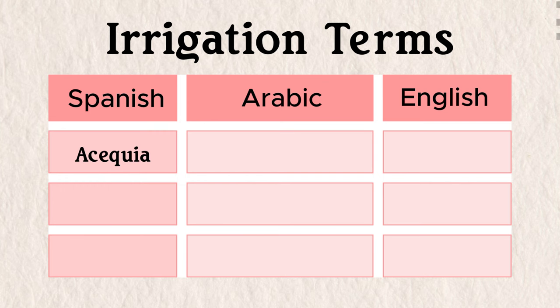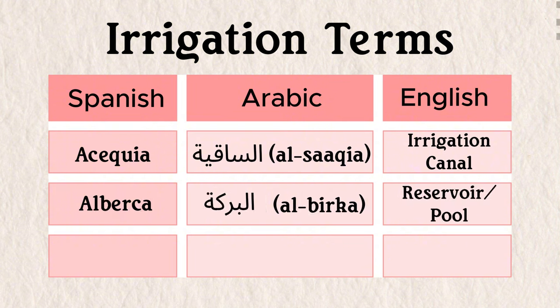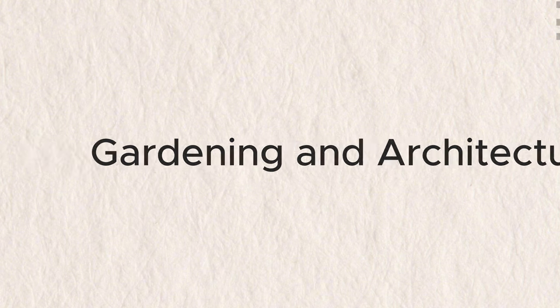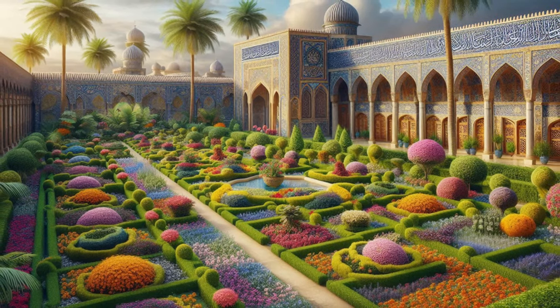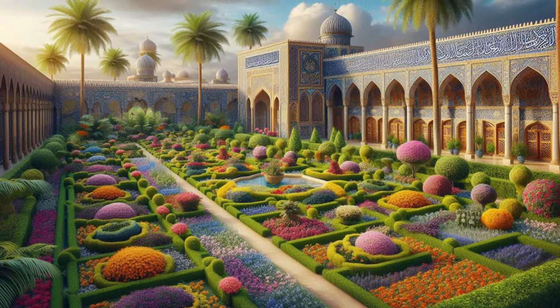Irrigation terms that Spanish has inherited from Arabic include: acequia (irrigation canal) from as-sāqiya; alberca (irrigation reservoir or pool) from al-birka; and alcantarilla (sewer) from al-qanṭara. Gardening had not been a part of the culture in Hispania under Roman or Visigothic rule, but was considered almost a form of art in Arab culture. The Arabs brought new plant varieties as well as novel designs and materials they used to create breathtaking gardens reminiscent of a thousand and one nights.